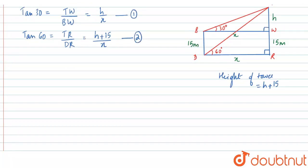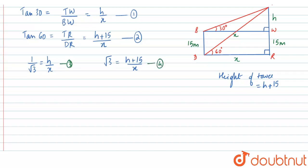From equation 1, tan 30 = 1/√3, so 1/√3 = h/x. From equation 2, tan 60 = √3, so √3 = (h + 15)/x. Let these be equations 3 and 4. Cross-multiplying gives x = √3·h from equation 3, and √3·x = h + 15 from equation 4.